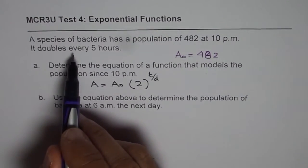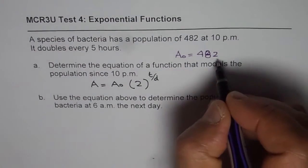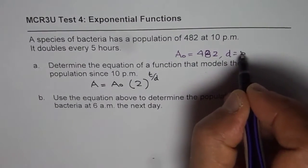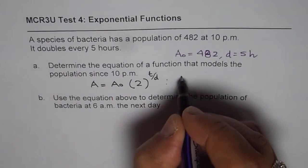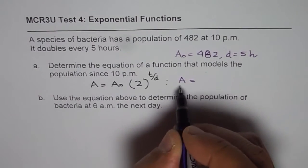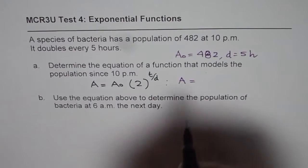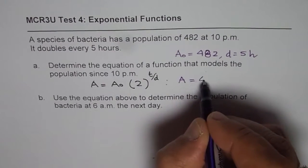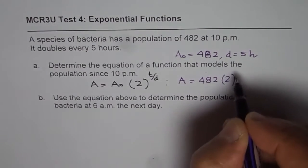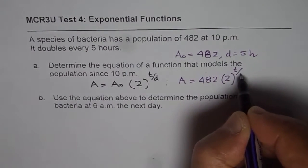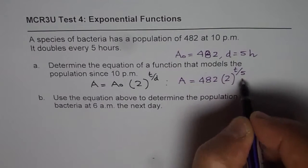It doubles every 5 hours, so the doubling time is 5 hours. If I substitute these values here, I get my formula which is A, population at any instance of time is 482 times 2 to the power of T over 5, the doubling period.